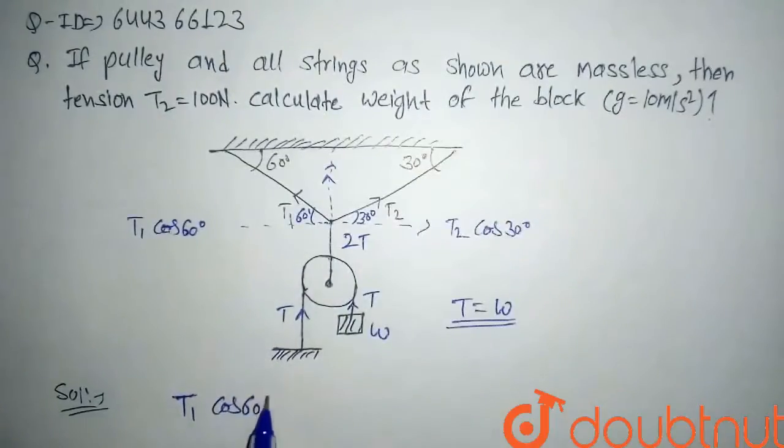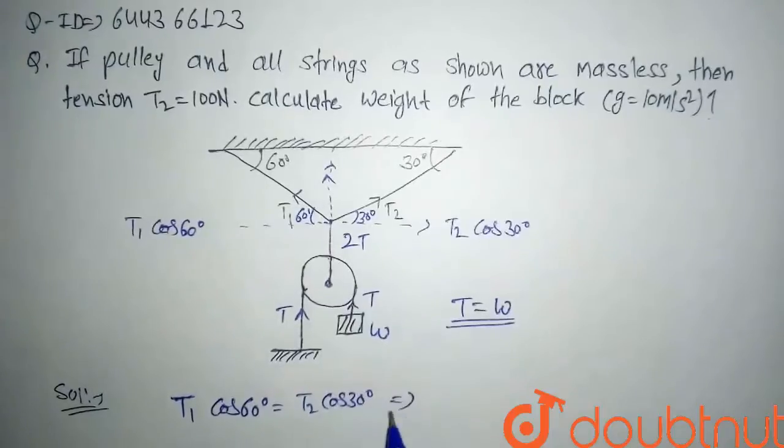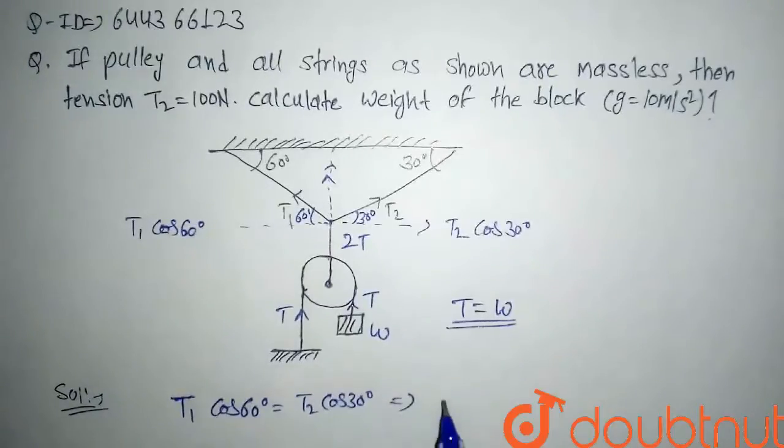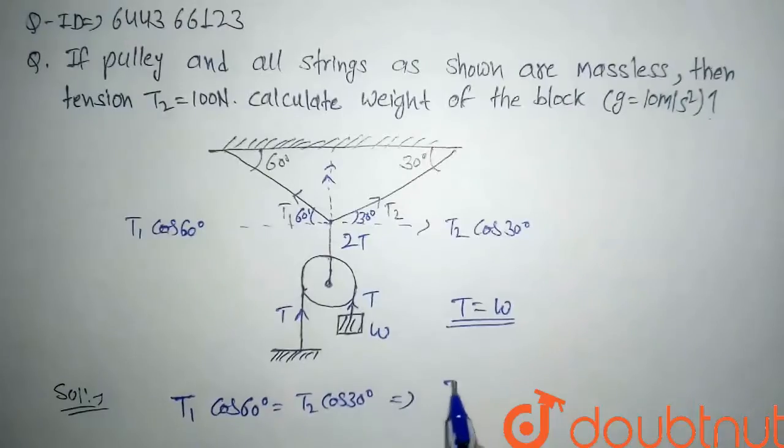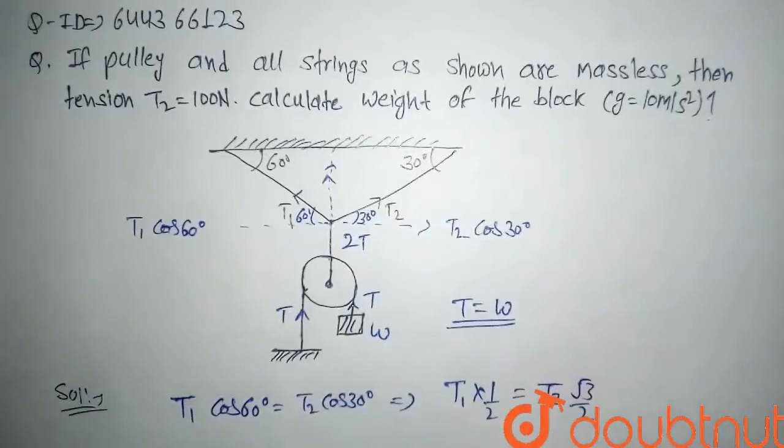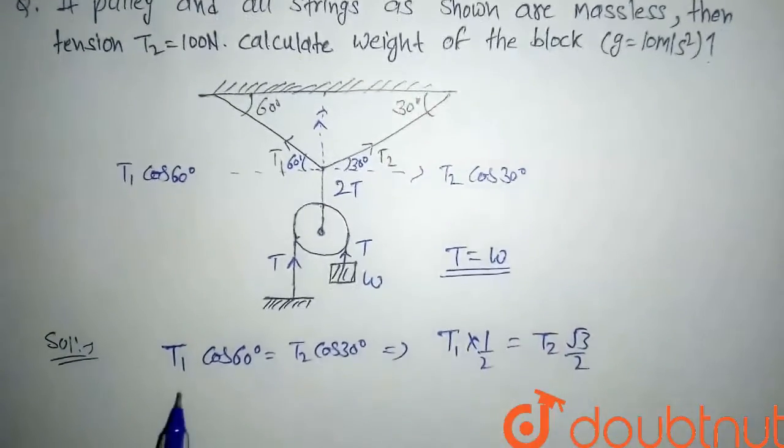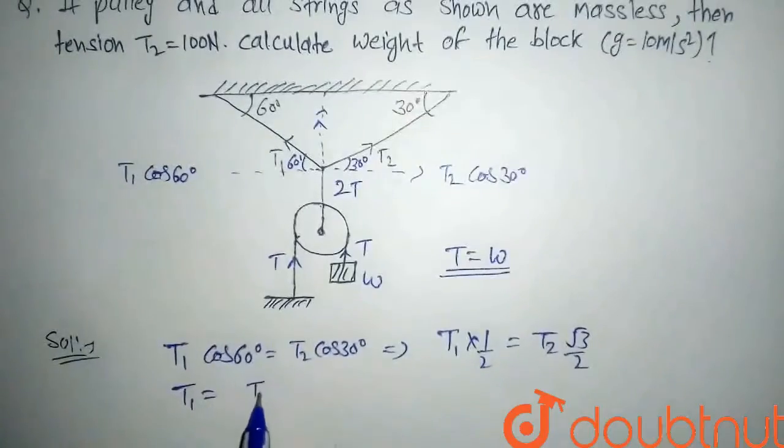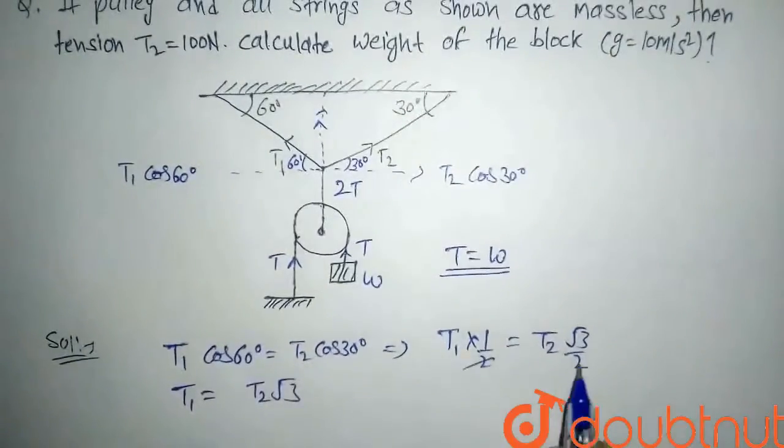cos 60 will be equal to T2 cos 30. So if we equal that and put the value of cos 60 and 30, this value will be 1/2 and this value will be √3/2. So from here T1 will be equal to T2√3.